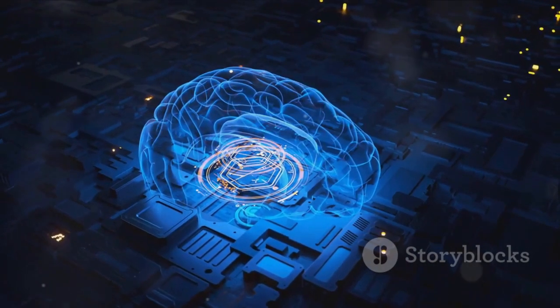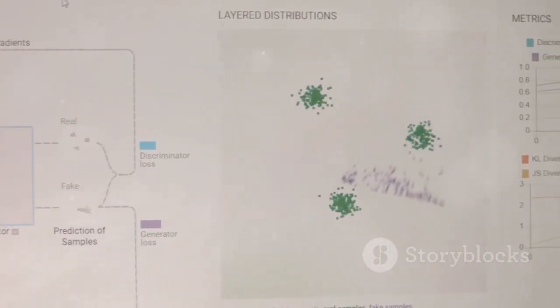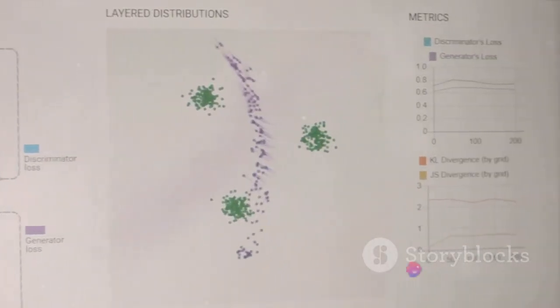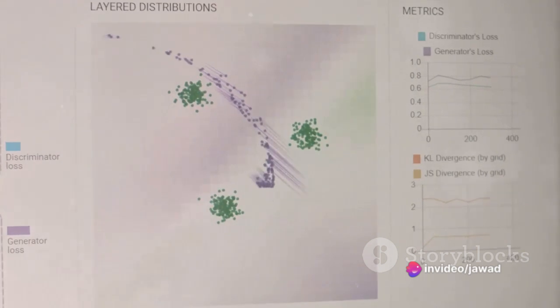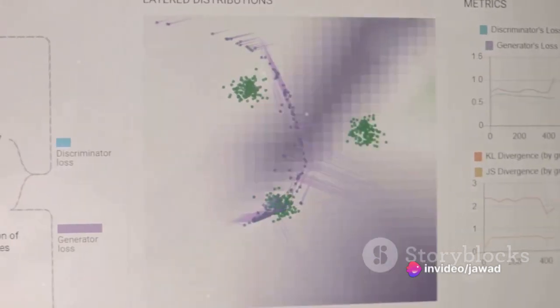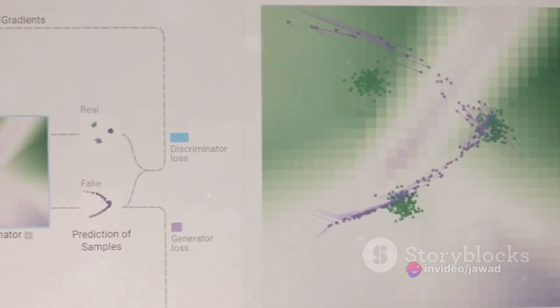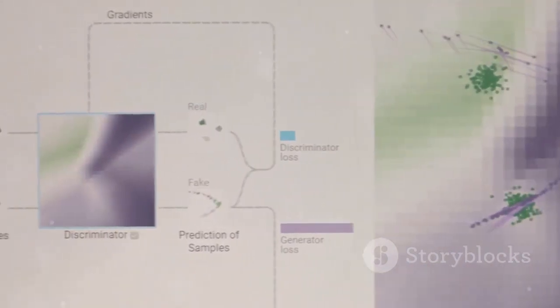Or take the example of cancer diagnosis. Machine learning models, trained on vast amounts of patient data, can predict the likelihood of a patient developing certain types of cancer. This has the potential to save countless lives by enabling early detection and treatment.